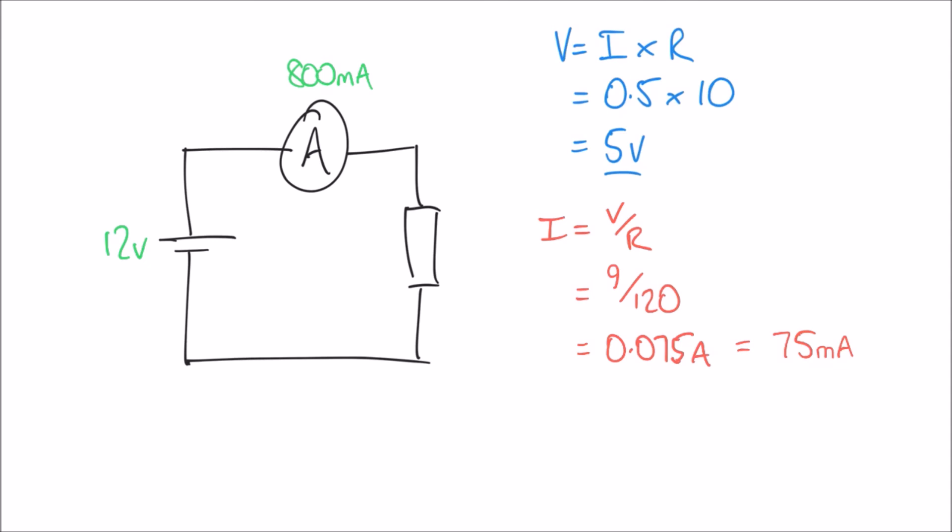So the final arrangement of our formula: R equals V over I. Again, we have this problem with these milliamps, 800 milliamps. We have to express that in terms of amps in the formula. So dividing by 1,000, we can express 800 milliamps as 0.8 amps by dividing by a factor of 1,000 there.